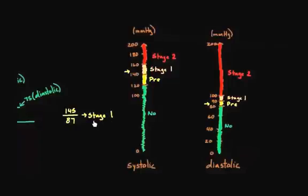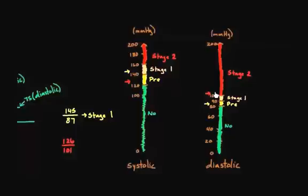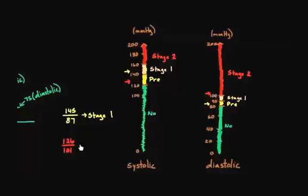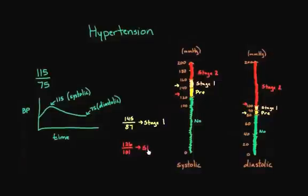Let's do one more example. Say you have 126 over 101. This person's systolic of 126 is in pre-hypertension, but their diastolic of 101 is right above the 100 mark, putting them in stage two hypertension. So overall they're going to be in stage two, because the rule again is that you go with the higher stage. That's how you figure out what stage of hypertension someone's in.